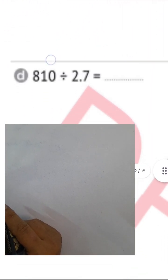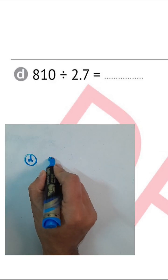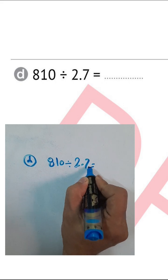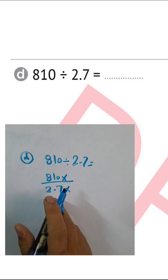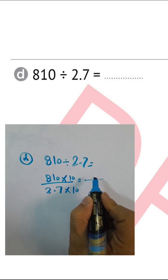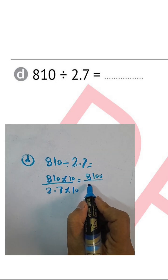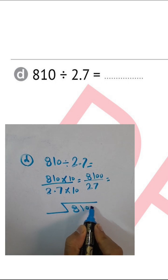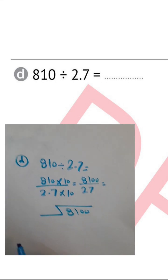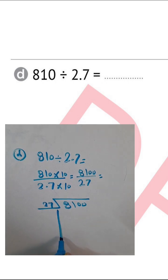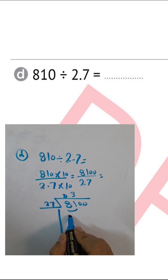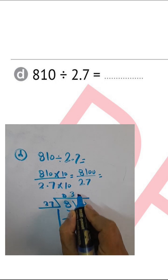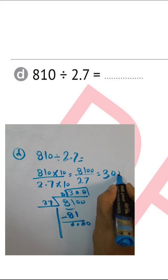Next question, letter (d): 810 divided by 2.7. Write 810 over 2.7, then multiply by 10 to cancel the decimal point, giving 8100 divided by 27. Using long division: 81 divided by 27 equals 3; 3 times 27 equals 81; then 00 divided by 27 equals 0. The result is 300.